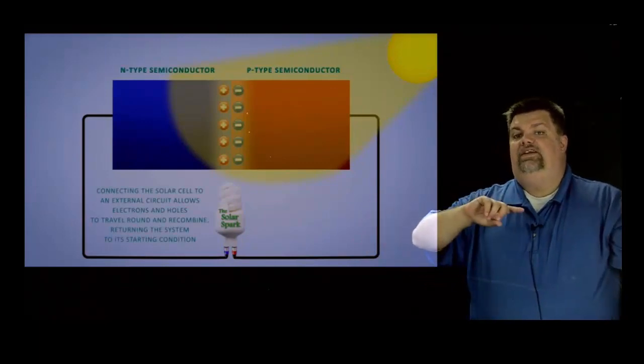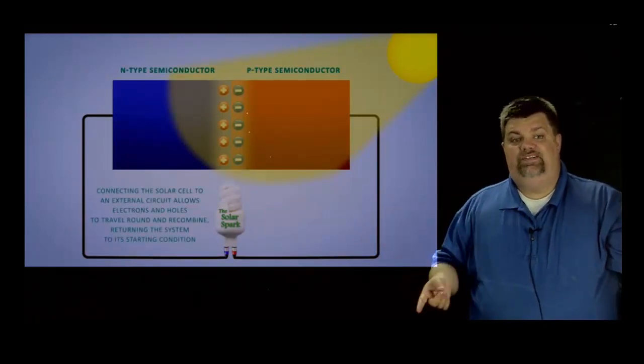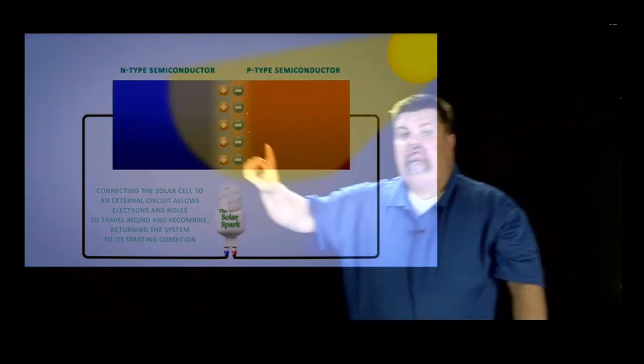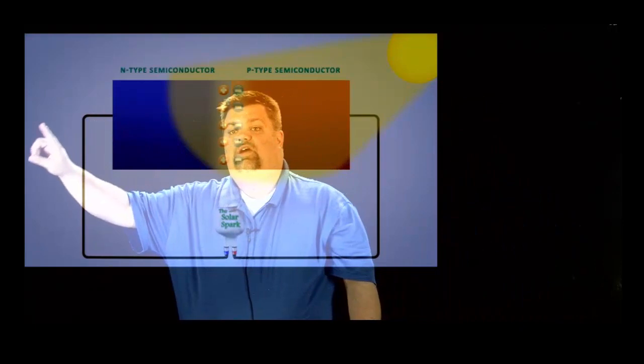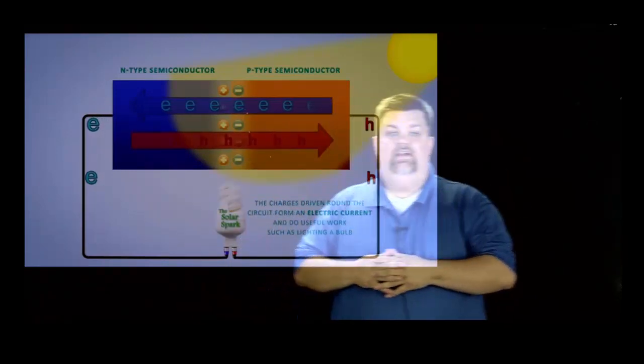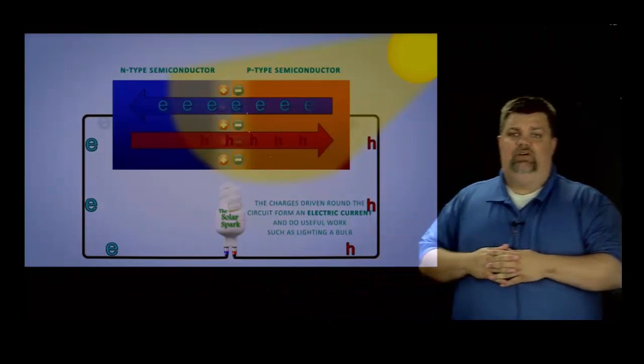However, if we create a circuit that has a resistor, like say a light bulb or any device that does work, what happens is we're going to have electrons will come out this path around and we'll have holes that come out this path around because opposites attract. Now, that's current.